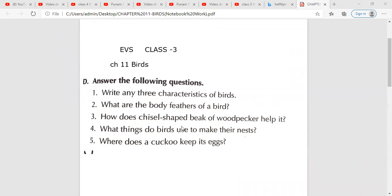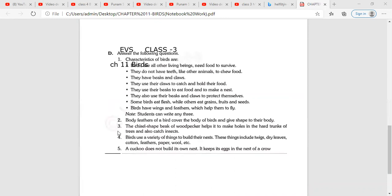Then, question number three. How does chisel-shaped beak of woodpecker help it? So, the chisel-shaped beak of woodpecker helps it to make holes in the hard trunks of trees and also catch insects.